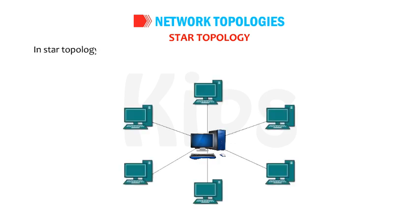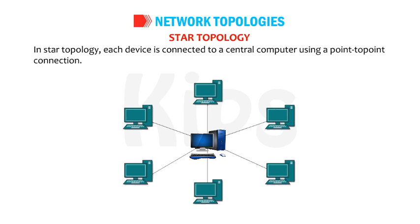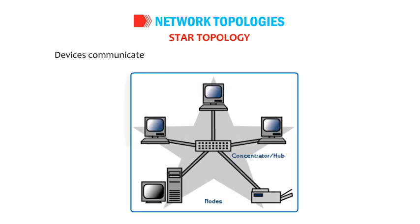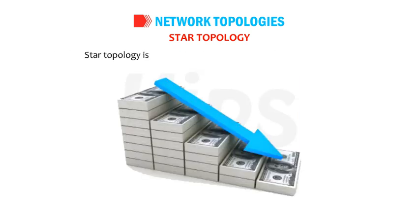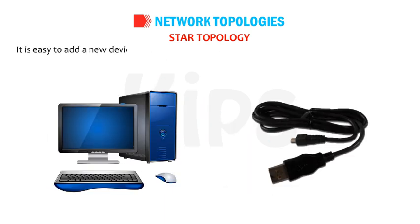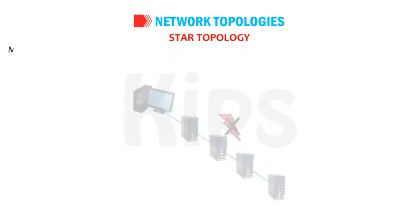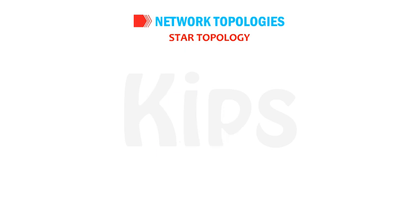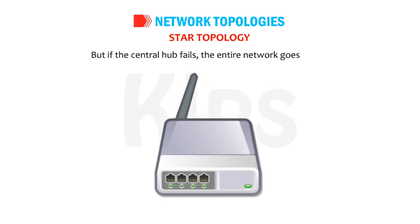Star topology — each device is connected to a central computer using a point-to-point connection. The central server acts as a hub, and devices communicate across the network by passing data through it. Star topology is very popular because the startup cost is low, it is easy to add a new device as only one cable is required, and configuration is simple. Moreover, the network is robust — if any one connection fails, the other connections remain intact. However, if the central hub fails, the entire network goes down.